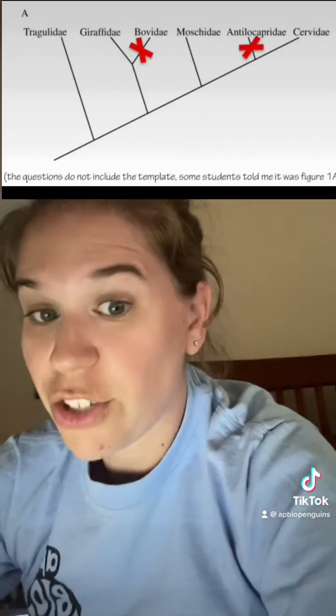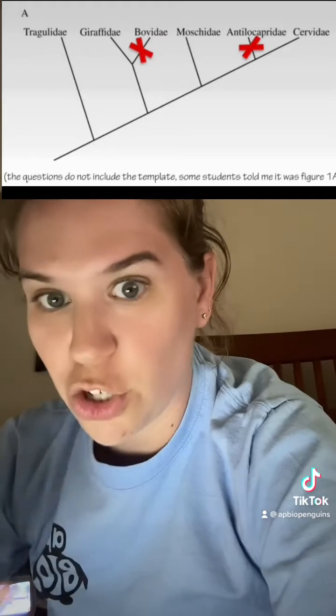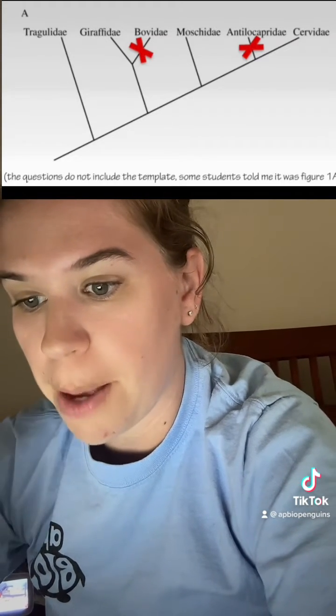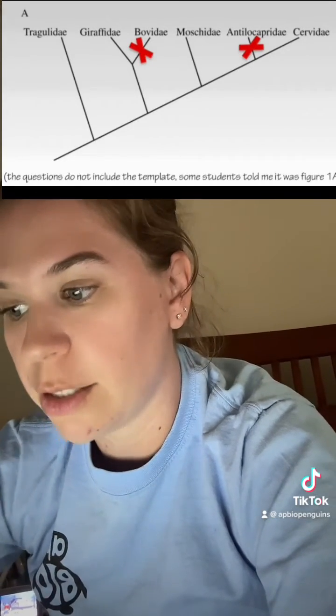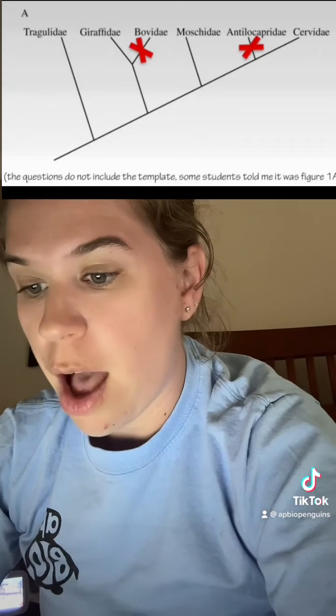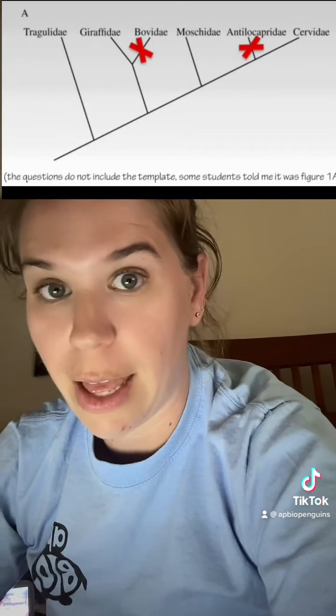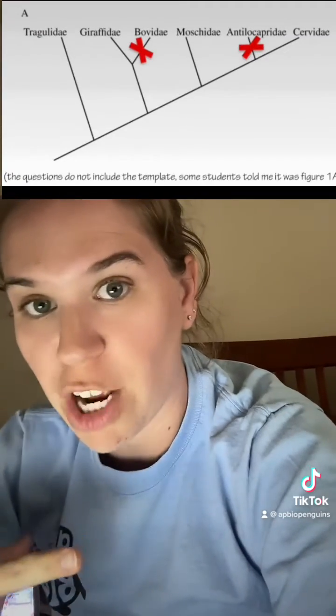There's a table given to us and it shows us these different characteristics, and there's X's to show which ones have which characteristic. Characteristic one is found in B and A. The question's asking us, using the template which was just like this diagram, represent the points in which characteristic one evolved by marking an X on it. So since B and A both have that trait, we know it must be on that branch going toward that lineage.